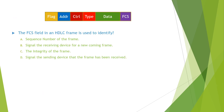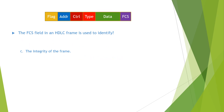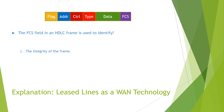The question reads: the FCS field in an HDLC frame is used to — option A: identify the sequence number of the frame; option B: signal the receiving device of a new incoming frame; option C: verify the integrity of the frame; option D: signal the sending device that the frame has been received. As we know, the Frame Check Sequence field is used to identify the integrity of the frame. So the answer for this question is C. You can find the detailed explanation in the video Leased Lines as a WAN Technology.